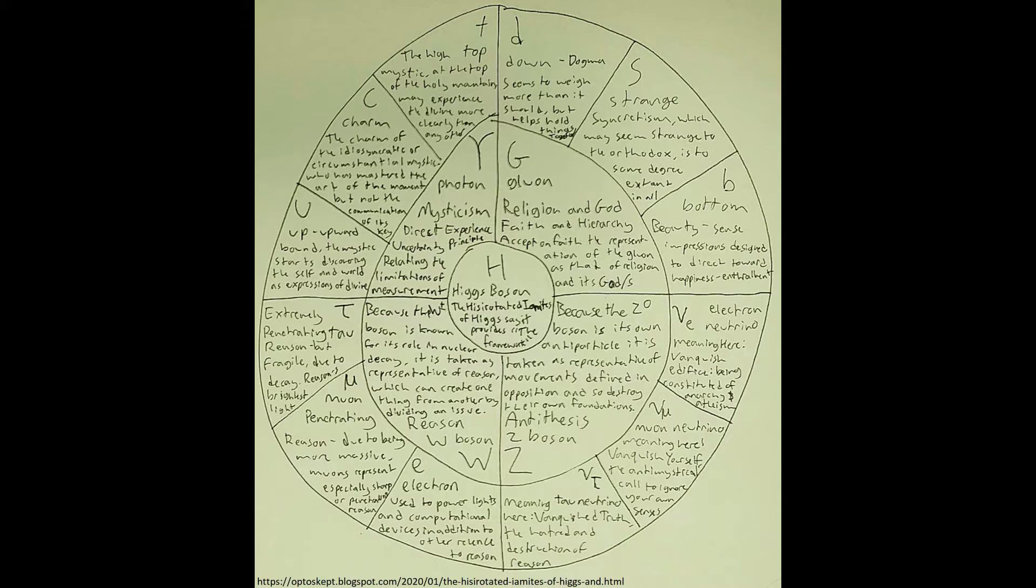Here is the standard model of perspectives of the Hisirotated Iamites of Higgs. One issue to keep in mind is that based on quantum field theory, what really seems most fundamental is the field that carries each particle, which is everywhere, and in which an excited state is called a particle.